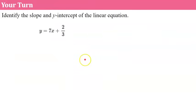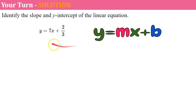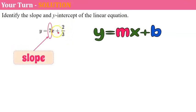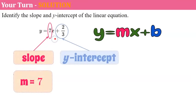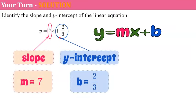Now it's your turn. Pause the video, identify the slope and the y-intercept of the line, and come back and hit play when you're ready to check your work. Welcome back! Again, it's solved for y and has mx plus b. Our slope is the coefficient of x, which is 7, and our y-intercept is positive 2 thirds. So this line crosses the y-axis at 2 thirds and has a slope of 7.